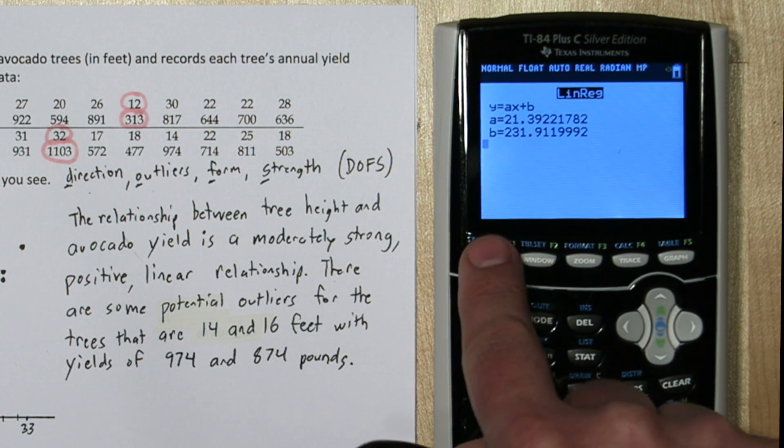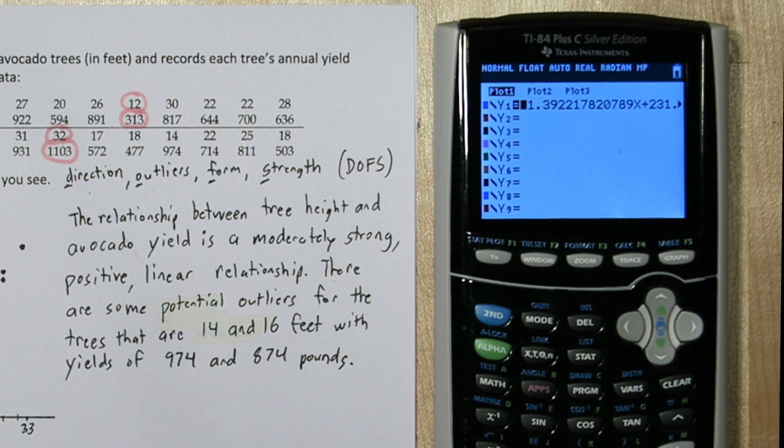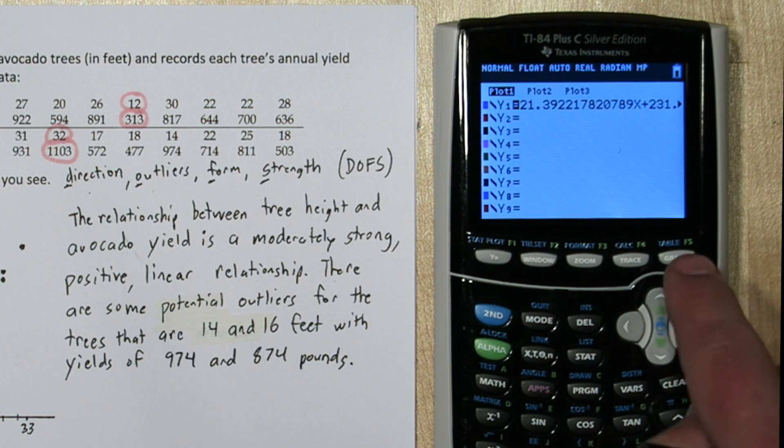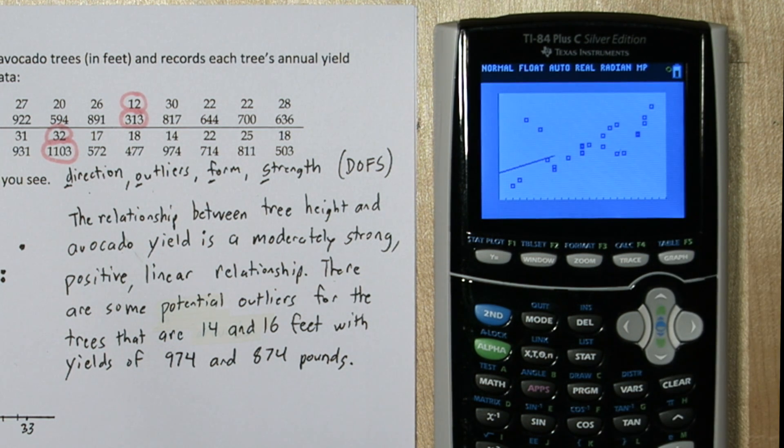Now if you press y equals right now, here's our regression equation stored right in y sub 1. So now when I press graph, I have my original scatter plot with the regression equation.